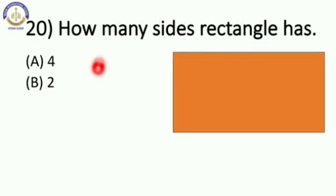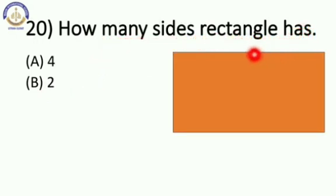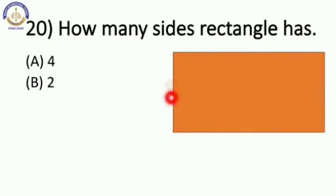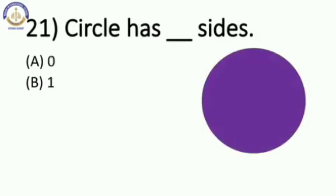Next: how many sides does a rectangle have? Rectangle mein kitni sides hain? 1, 2, 3, and 4. Rectangle has 4 sides. Option number A.